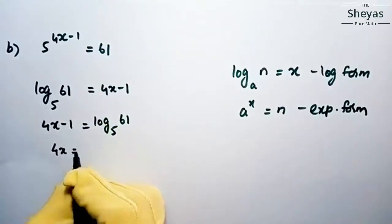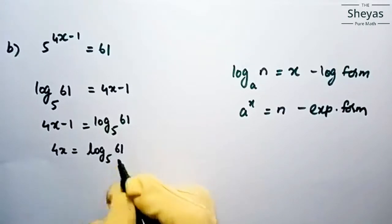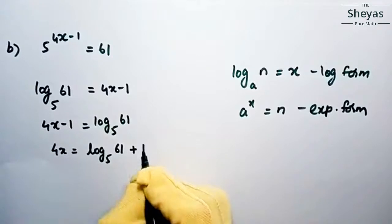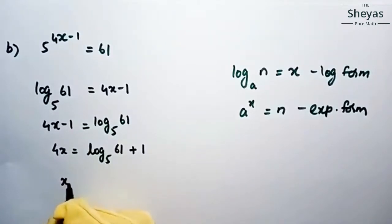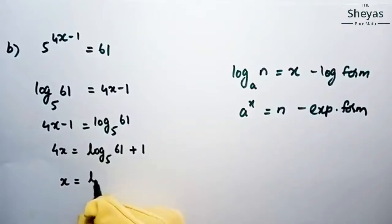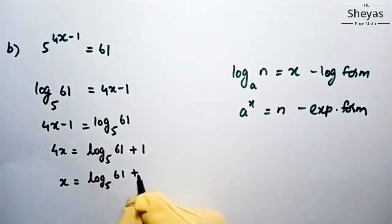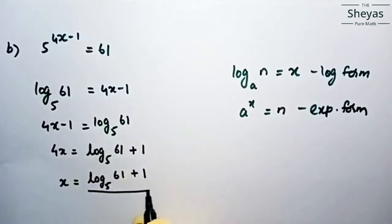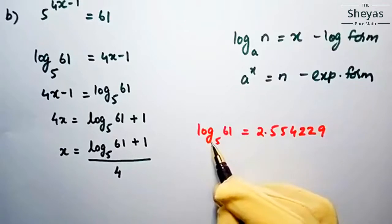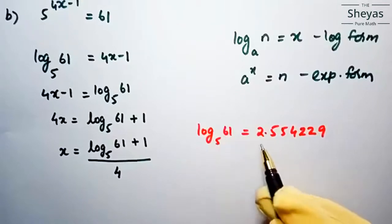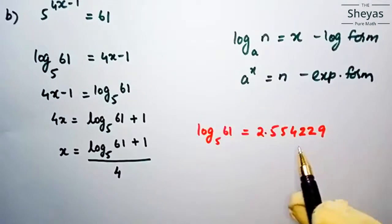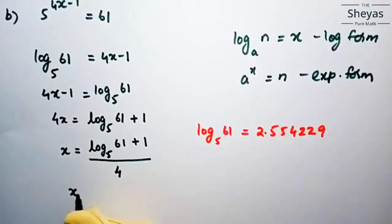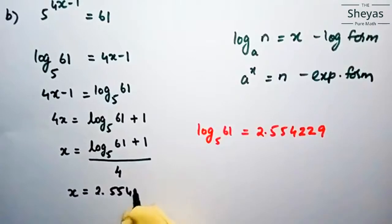Now 4x minus 1 can be written as log base 5 of 61, so 4x equals log base 5 of 61 plus 1. Then x is equal to log base 5 of 61 plus 1, all divided by 4 — when you take 4 to the other side it becomes division. Using the calculator, log to the base 5 of 61 is equal to 2.554229, so substituting: x is equal to 2.554229 plus 1, divided by 4.